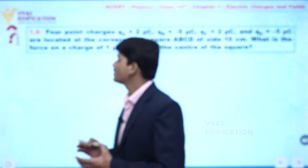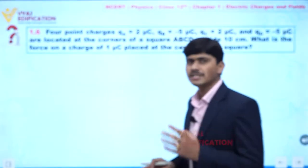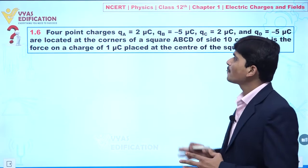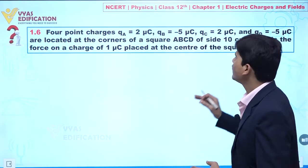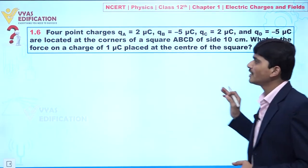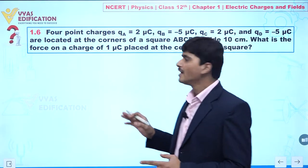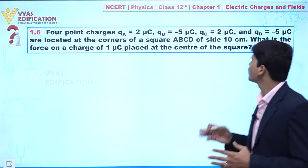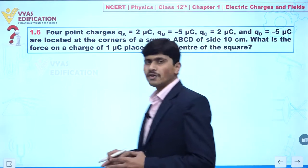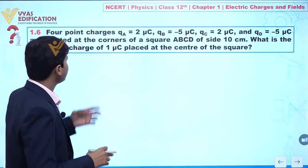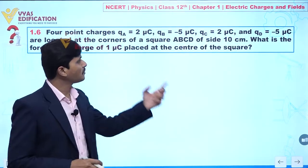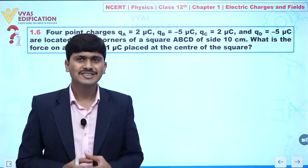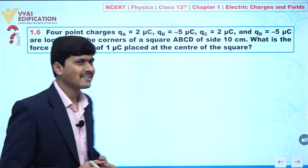Now, dear student, we are going to discuss this question. This is 1.6. In this question, it is given to you: four point charges QA, QB, QC and QD are located at corners of a square ABCD of side 10 centimeter. What is the force that is exerted on one microcoulomb placed at the center of the square? Now we are going to solve this question. Concentrate on the screen.